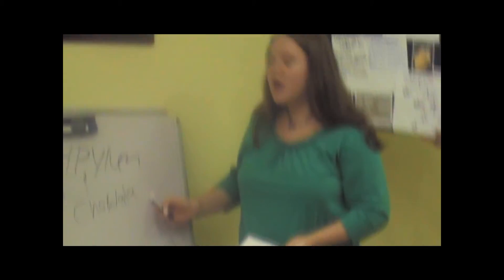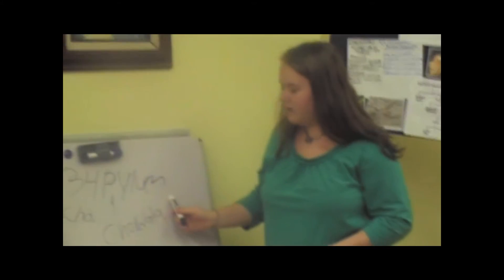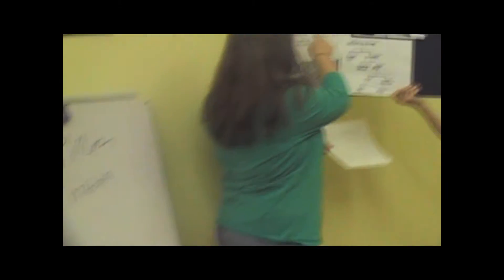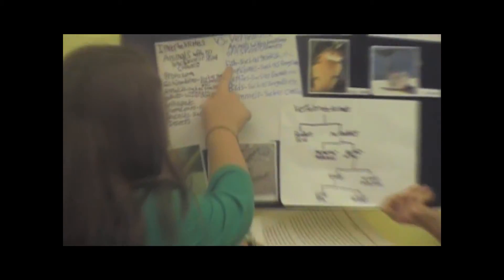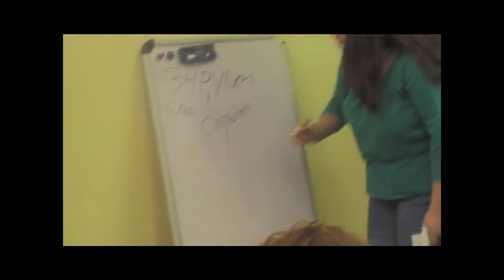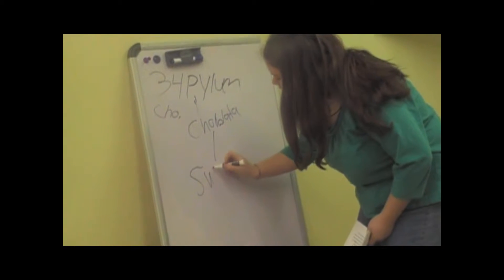Chordata consists of five different groups, which are birds, fish, amphibians, reptiles, and mammals. And then we break that down further into a subphylum.